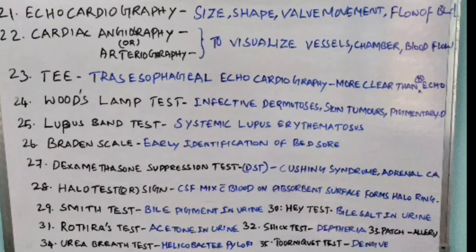Twenty-seventh point: Dexamethasone Suppression Test, otherwise called DST. It is done to find out Cushing's syndrome or adrenal tumor.